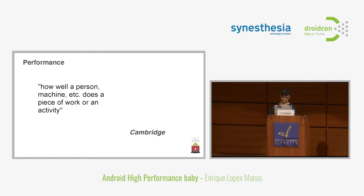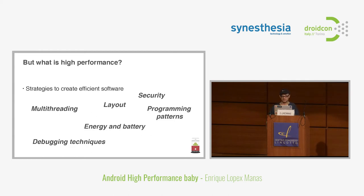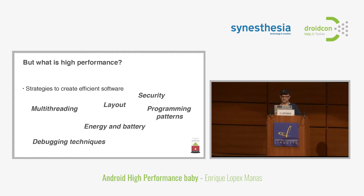That's the Cambridge definition. When it comes to software, we have to adapt it a little — it's always about strategies we use to create software that is efficient. In the case of mobile platforms, we have some special attributes to consider. We can think of energy and battery, because a phone is not always connected to an energy source and has a limited amount of energy — we need to make the best out of it.